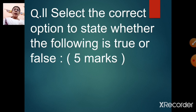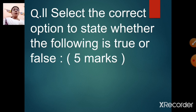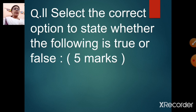Now this is your second head question: select the correct option to state whether the following is true or false. This will also be of 5 marks — 5 questions, each carrying 1 mark. So first head question is filling the blank — 5 marks. Second head question is true or false — 5 marks. That makes it 10 marks now.